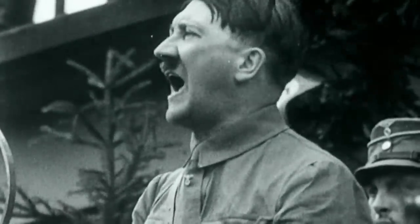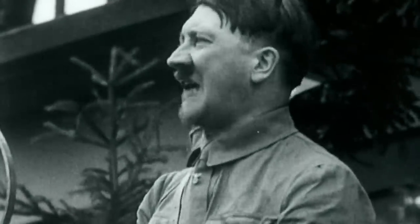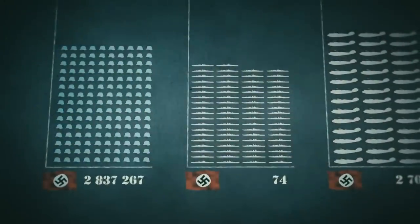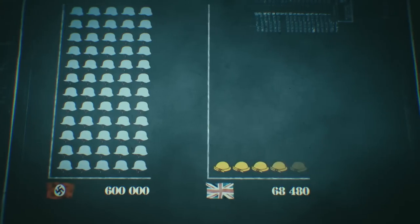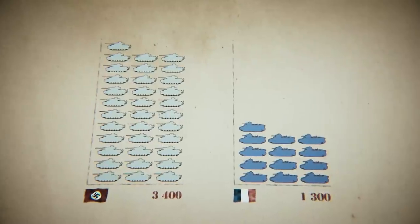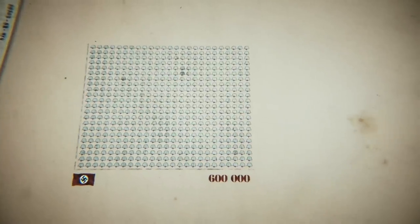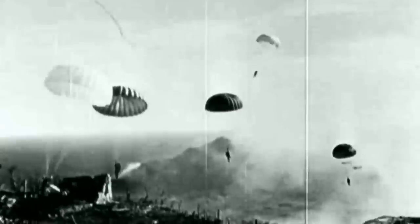Hitler had come to power thanks to the huge amount of economic misery caused by the Great Depression. He had turned the punishing numbers of the Versailles Treaty into a rallying cry for his people, and taken the Allies to the brink of appeasement as they scrabbled for the numbers to oppose him. In these, as in so many other ways, numbers lie at the heart of the events that pushed the world to war. It would become another great war driven by numbers — and in the years to come, those numbers would keep on rising.